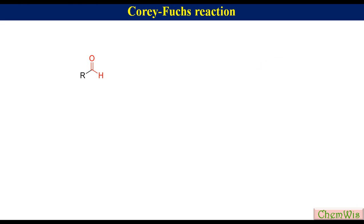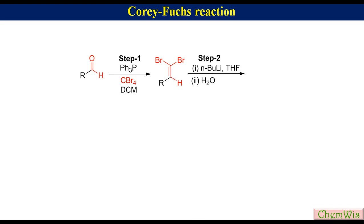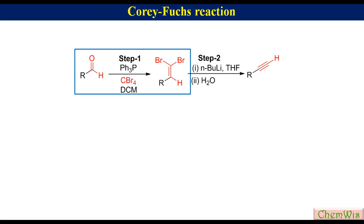In step one, an aldehyde undergoes a Wittig reaction with dibromomethylene triphenylphosphonium ylide, in situ generated by the reaction between triphenylphosphine and tetrabromomethane, to produce a 1,1-dibromoolefin. In step two, the 1,1-dibromoolefin reacts with a strong base like n-butyllithium, followed by aqueous workup, to produce a terminal alkyne.